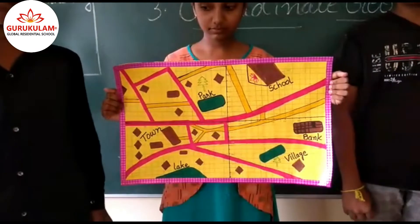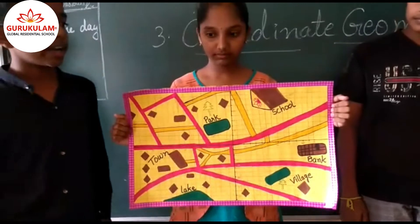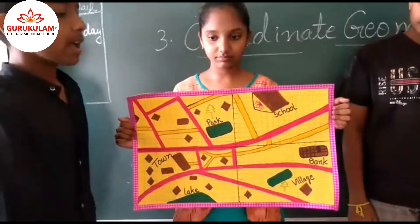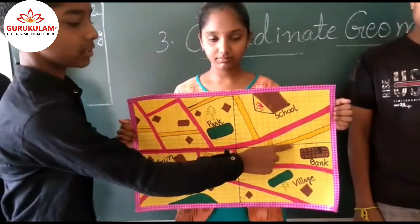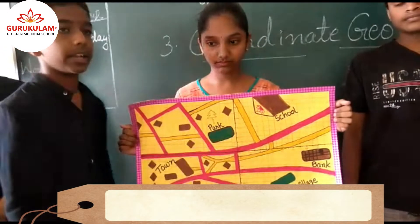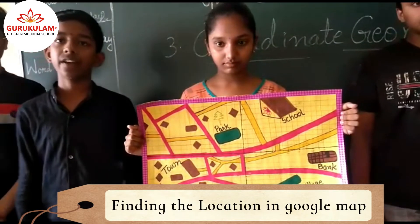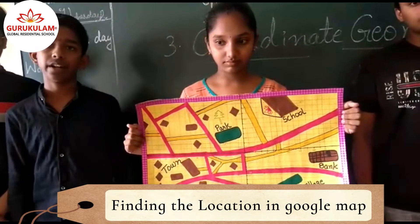For example, if I want to locate the coordinate of school, the X coordinate is 25 and the Y coordinate is 20. So the coordinates of school are (25, 20).